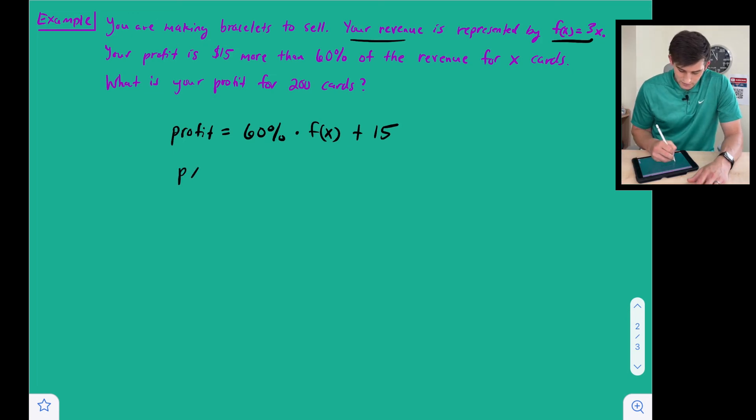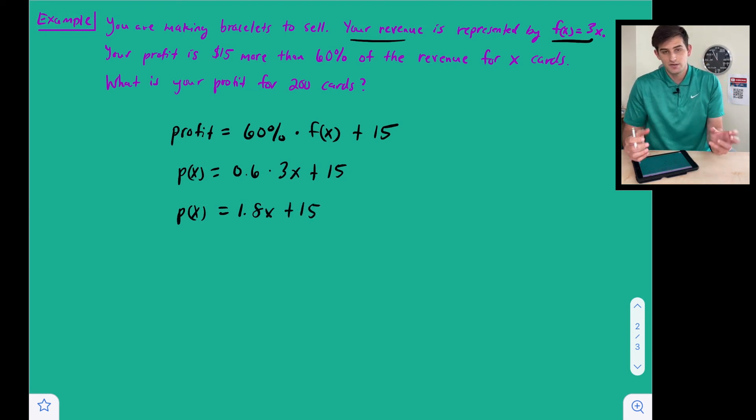So now let's say instead of profit, let's use p of x. 60% as a decimal would be 0.6, and now we're going to multiply this by 3x, and then we're going to add 15. So if we multiply 0.6 by 3x, we get 1.8x plus 15, and that could be our function now once we have performed those two transformations.